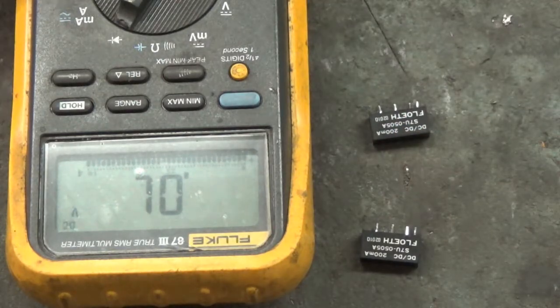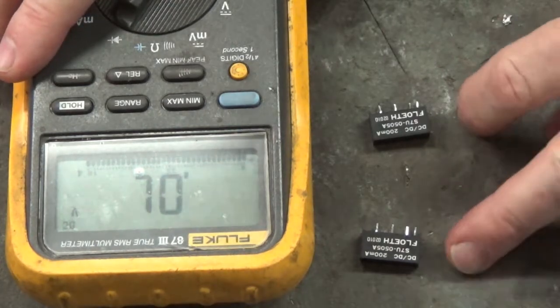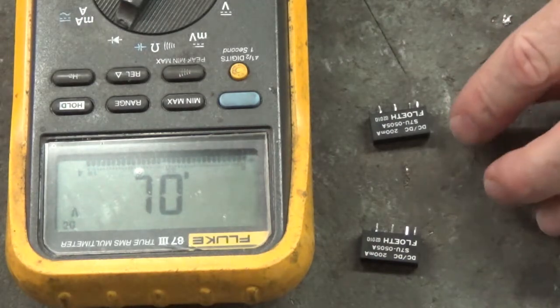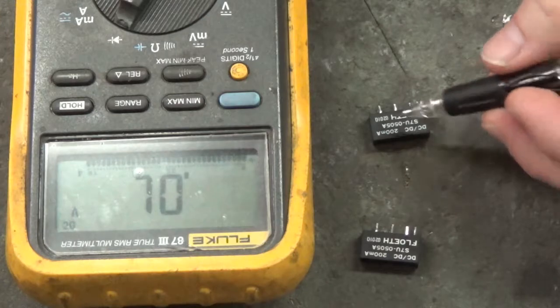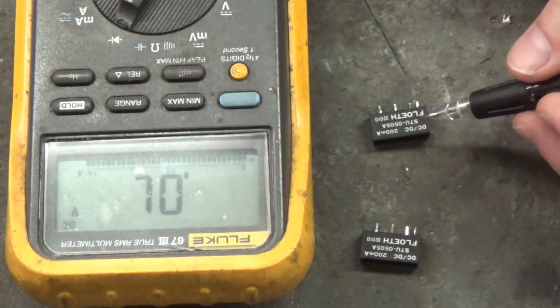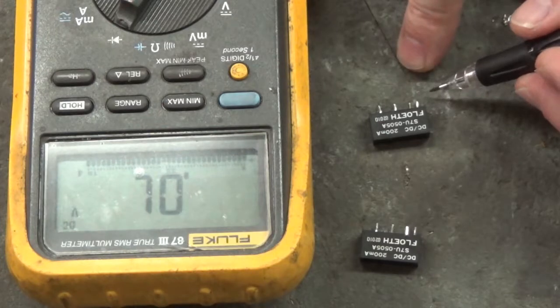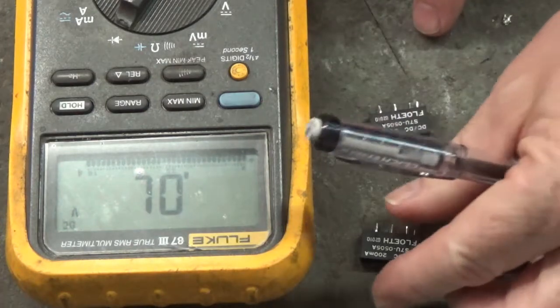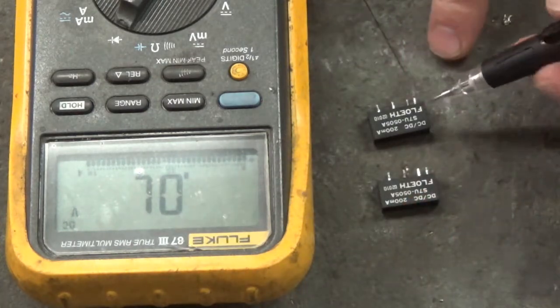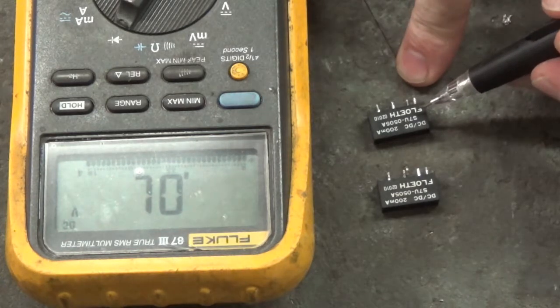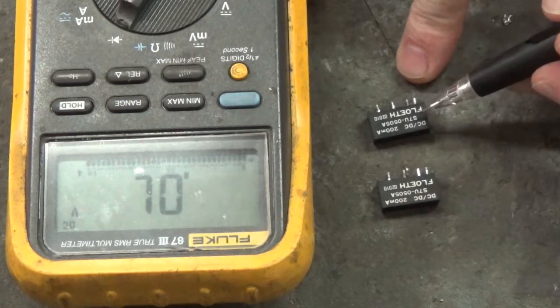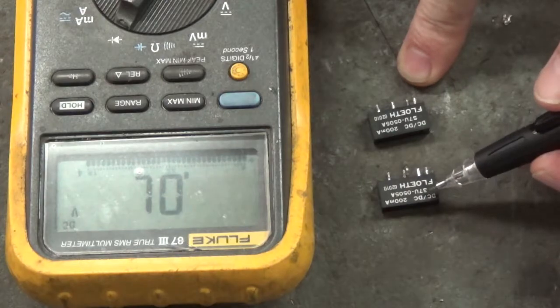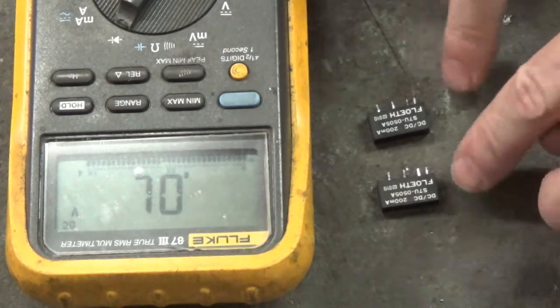I replace these two as a set. The reason being, inside these DC to DC converters there's some complex circuitry to take that five volts and make an isolated five volts on the output side. What probably happened here is an internal capacitor shorted out, and that's why we have that short circuit across pins one and two.